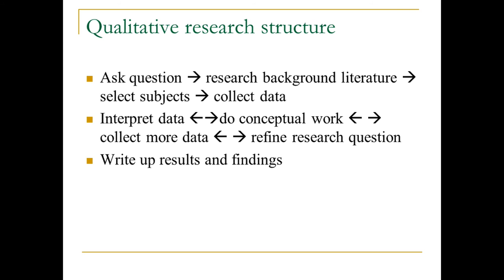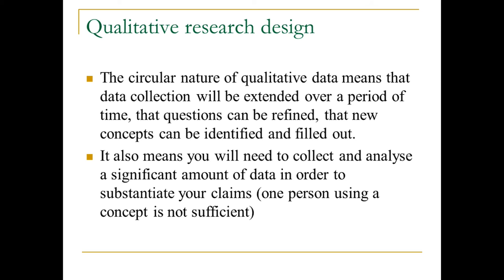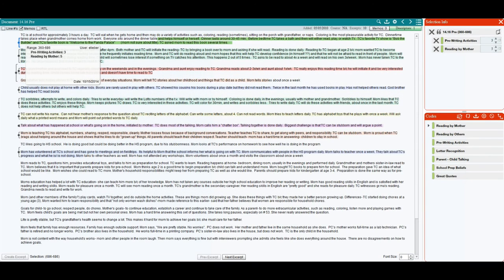With qualitative research, it's more of an iterative process of going back to the data, refining your questions, going back to the data, and then writing up your research results and findings at the end. The circular nature of qualitative data means that collection can be extended over a period of time, that questions can be refined, and new concepts can be identified and filled out. It also means you'll need to collect and analyze a significant amount of data in order to substantiate your claims — one person using a concept in your dataset is not sufficient.